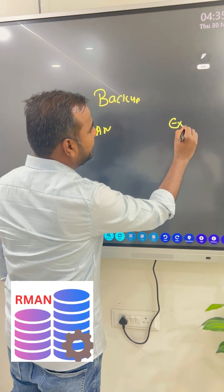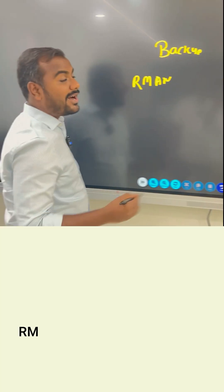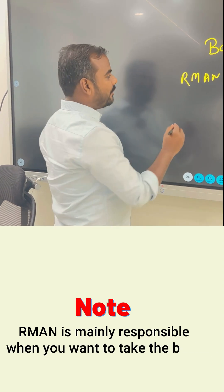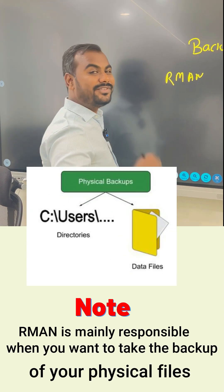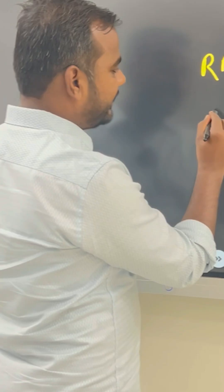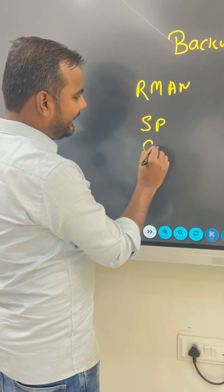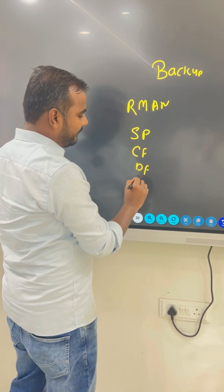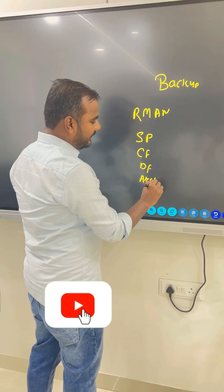RMAN is mainly responsible when you want to take the backup of your physical files — for example, the SV file, control files, data files, and archive logs. For those, we use the RMAN utility.